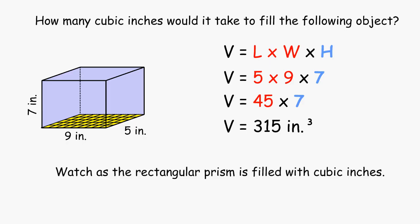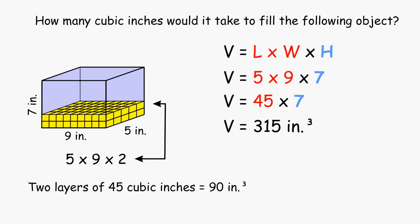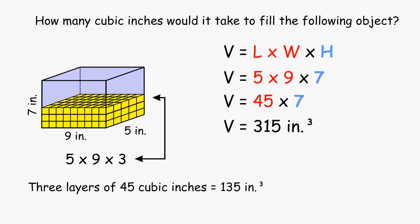Now that we know the answer, let's watch as we fill up the rectangular prism with cubic inches. We can see that one layer is equal to 45 cubic inches and that two layers is 90 cubic inches.